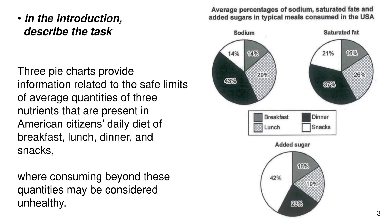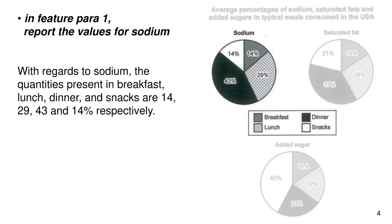In the introduction, describe the task. Three pie charts provide information related to the safe limits of average quantities of three nutrients that are present in American citizens' daily diet of breakfast, lunch, dinner, and snacks. Consuming beyond these quantities may be considered unhealthy.